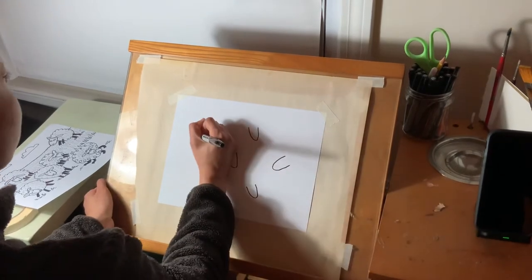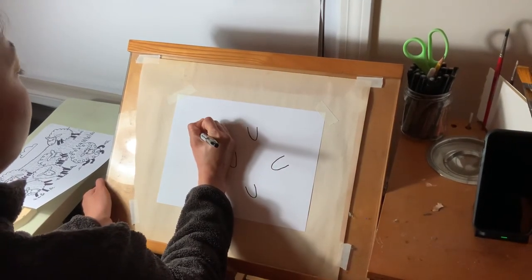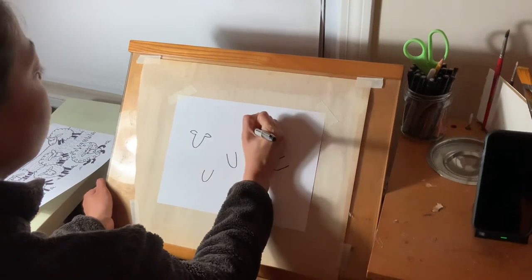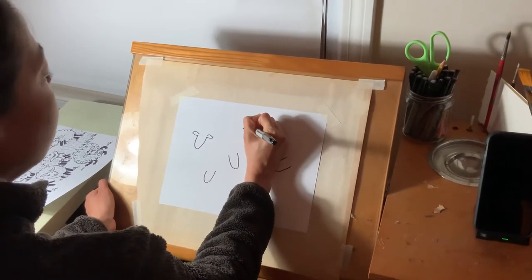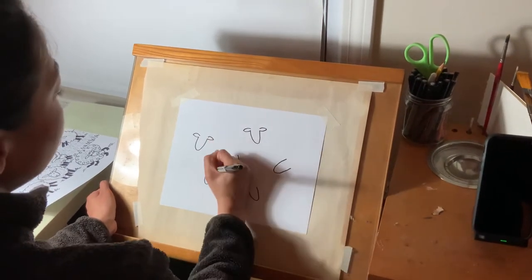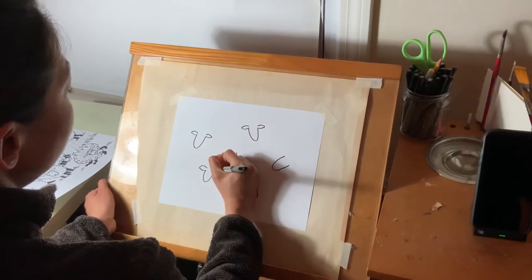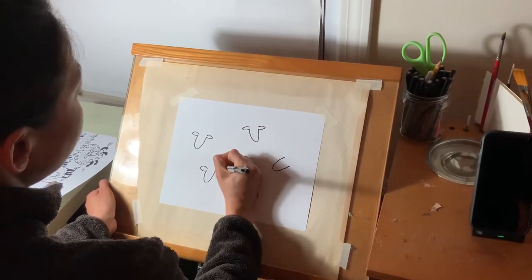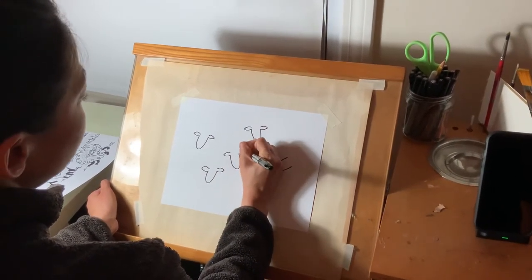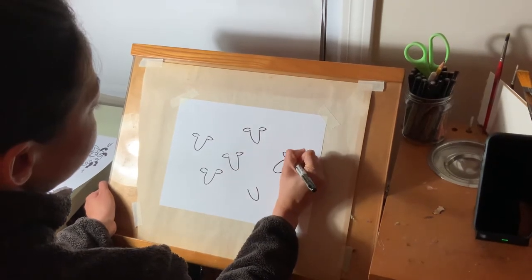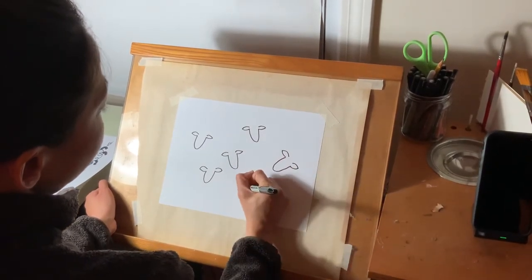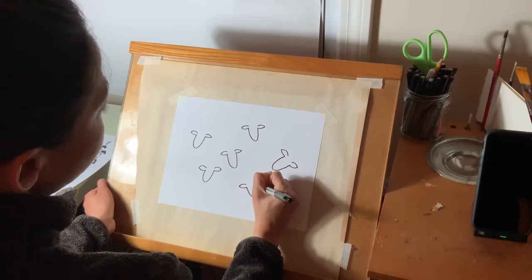Now I'm going to draw the ears on the sides of the head at the top, and they're a little like a wide oval. I'm making them kind of pointy on the ends. Now all my sheep have ears.